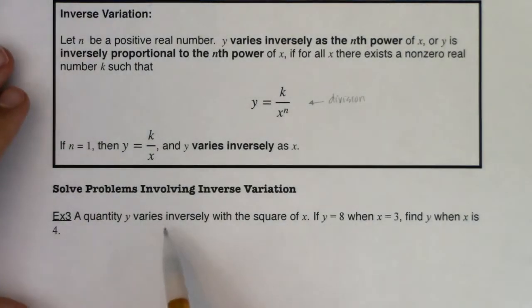So it says a quantity y varies inversely with the square of x. If y is equal to 8 when x is equal to 3, find y when x is 4. Alright, so with all of that, let's take a look.